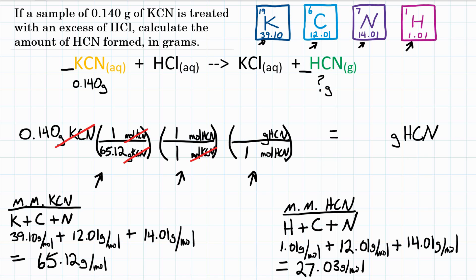That number goes into our conversion factor up top this time, because grams are on top. 27.03 grams of HCN is 1 mole of HCN. Looking at our units now, moles of HCN will cancel with moles of HCN on the top of the second conversion factor, bottom of the third conversion factor. We're going to be left with just final units of grams of HCN.